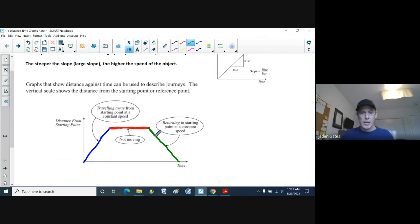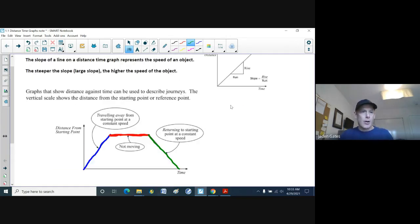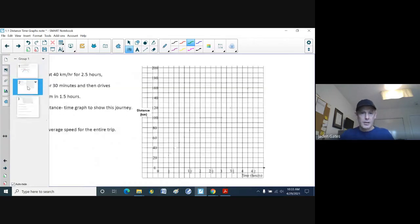But again, there's still a velocity. And so we could find the slope of either one of the colored lines. But of course, the red line, because it's a flat line, would have a slope of zero, meaning you're not moving. Now, to look at a specific distance time graph, here we go.